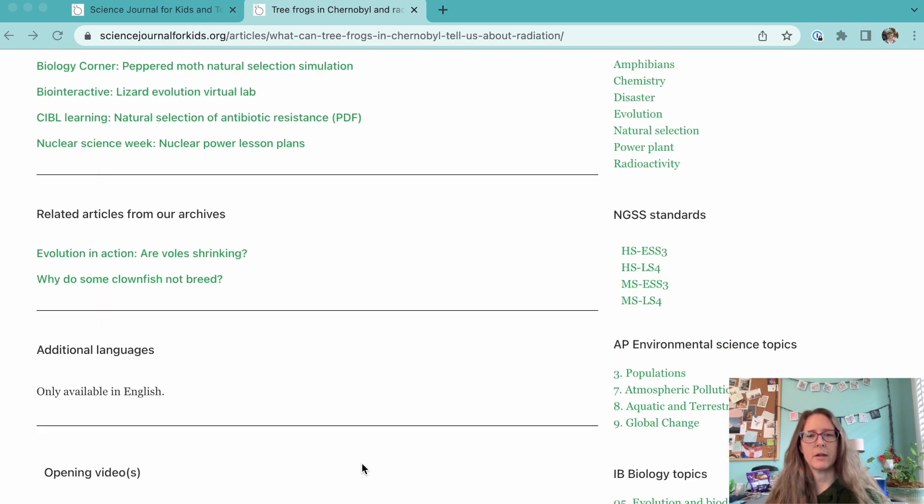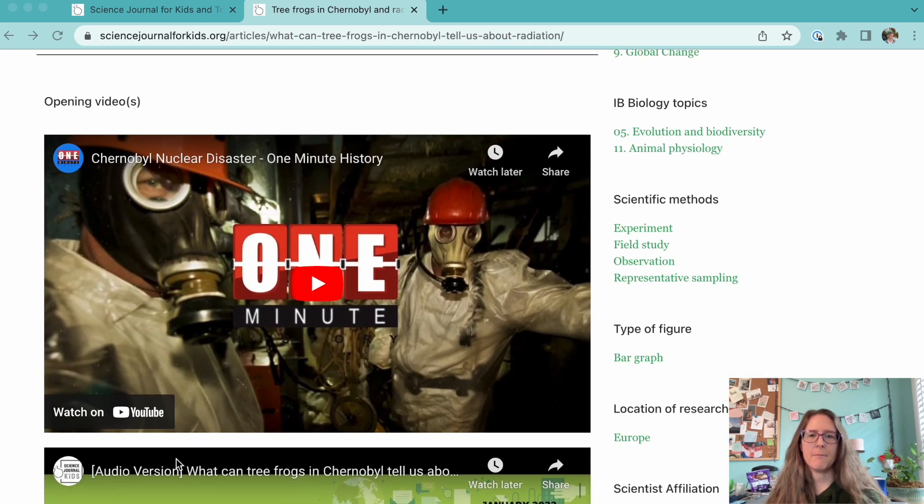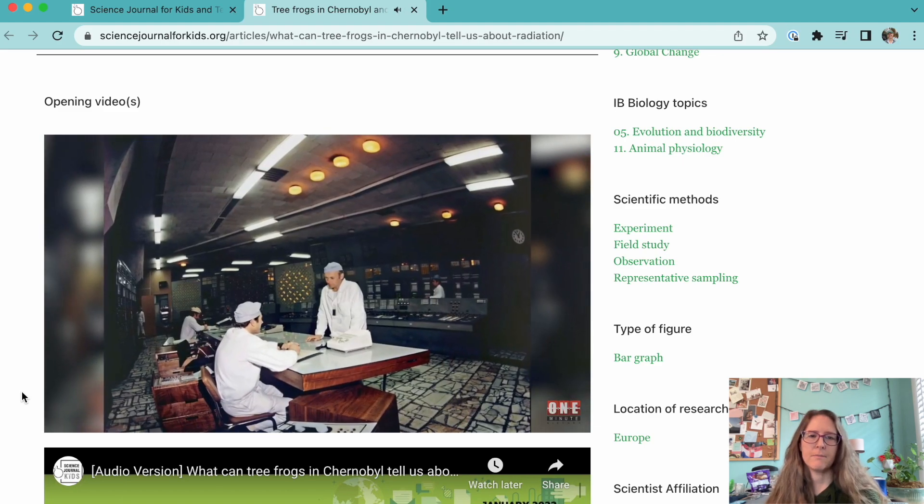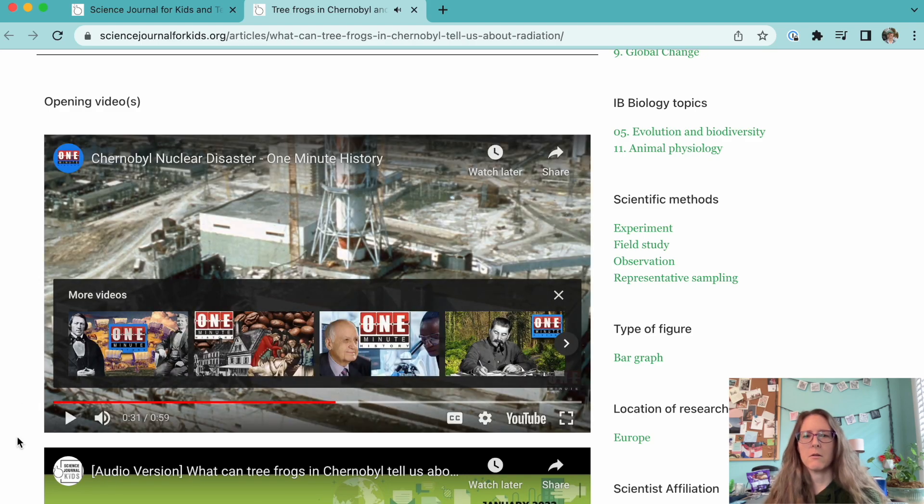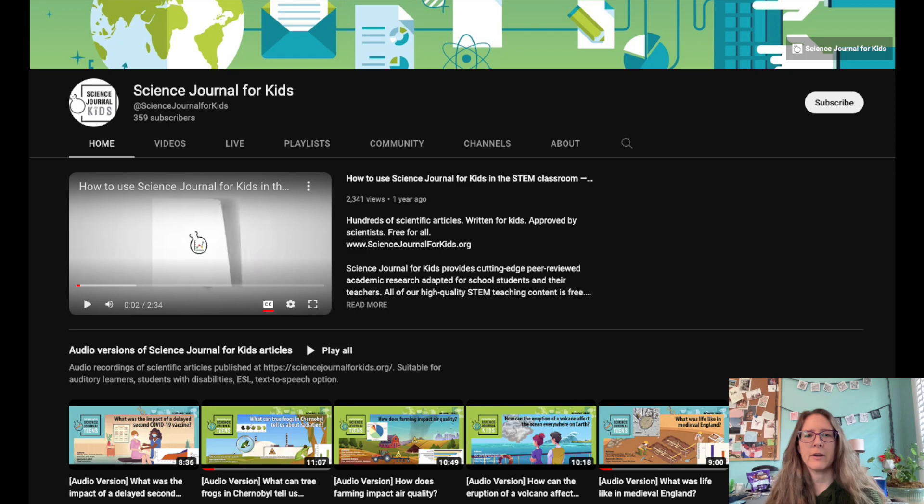Don't forget to take a look at our videos at the bottom of the article page when you're planning your class time. There's always a video meant to introduce the topic of the article to your students. For each adapted article we also provide an audio version of the article being read for those students who might need some extra help with their reading skills. You can access our audio versions on the web page for each adapted article or on the Science Journal for Kids YouTube channel.